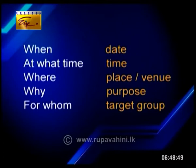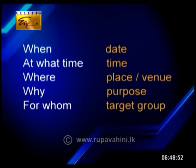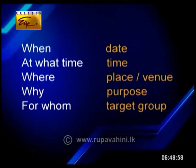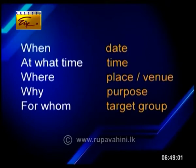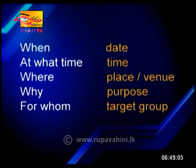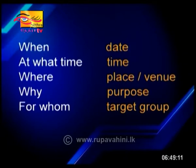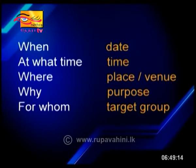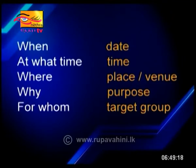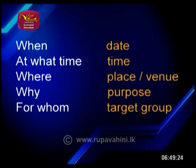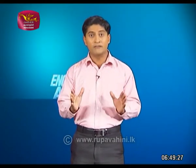Okay, children. Now I hope you have listed out the main facts of a notice. Let's see. First, you have to write when the event is — that is the exact date. Then write what time the event is. Next, write where it takes place — that is the venue. Then write the purpose of the event, or why you have the event; it is very important. In some instances, you may specify the target group. I hope you have got the main facts of a notice now.